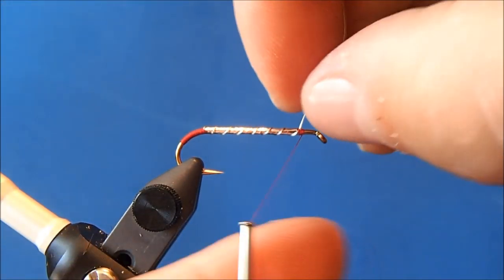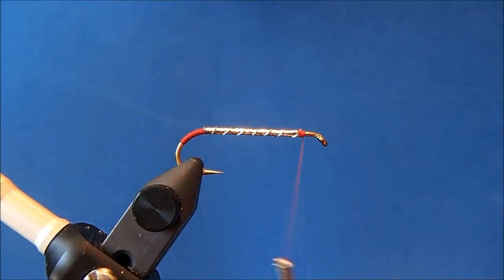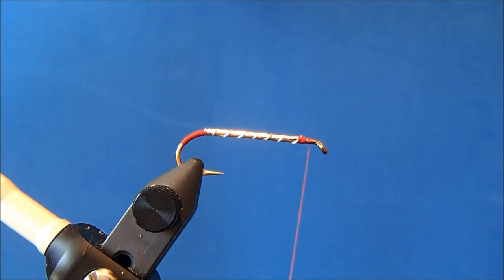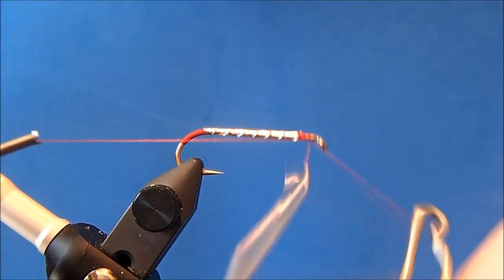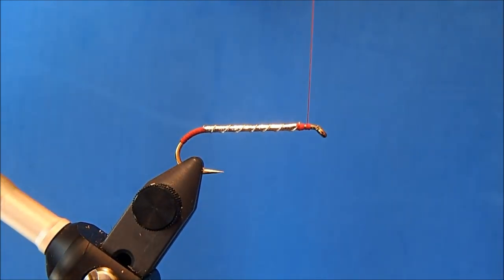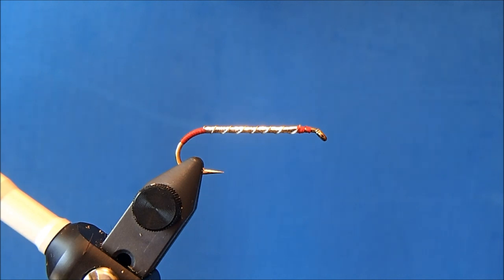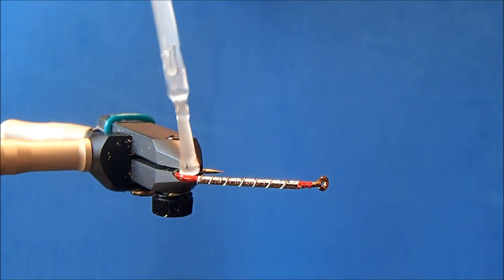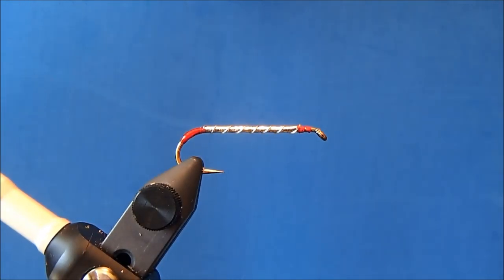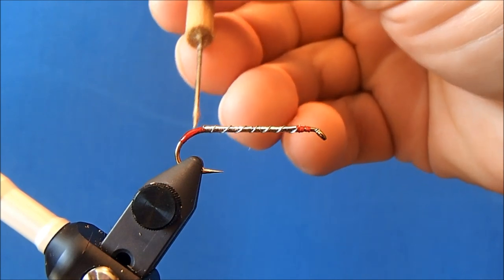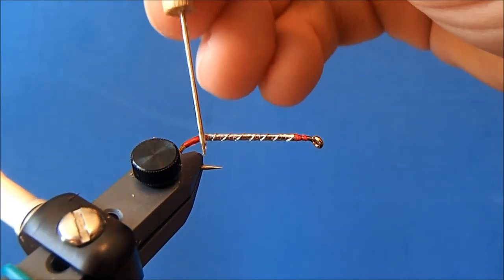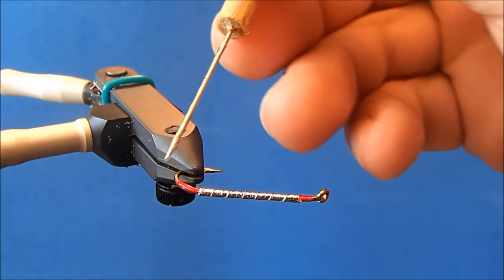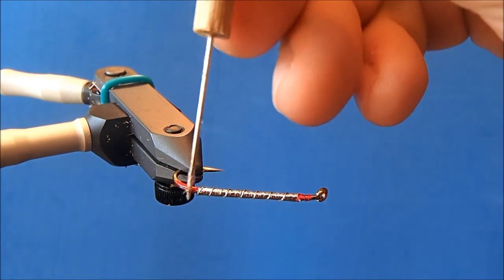And now at this point I'm going to do two things. One, I'm done with my red so I'll whip finish this and two, before I start to tie in my wing material I'm going to take just a little bit of Sally Hansen's and coat my tag and I do that just to help protect the threads there, also gives it kind of a clean look with the threads. Just making sure I've got it all covered.